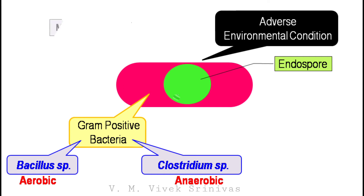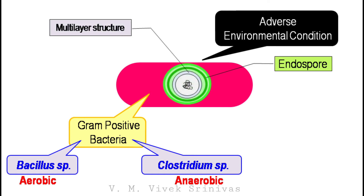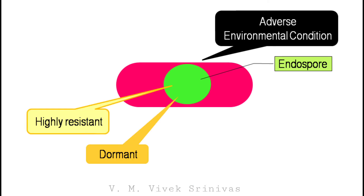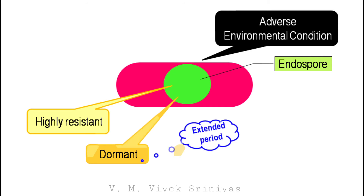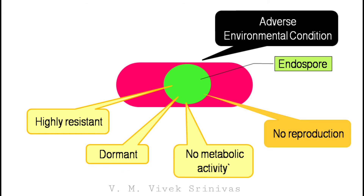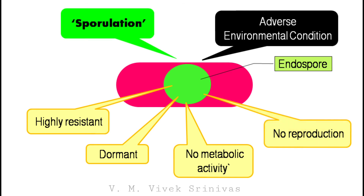This endospore is a multi-layered structure, which protects the genetic material inside the core. The endospores are highly resistant, dormant structures. They remain dormant for an extended period, even centuries. They have no metabolism and no metabolic activity, so they do not have a role in reproduction. The process of endospore formation in bacteria is referred to as sporulation.